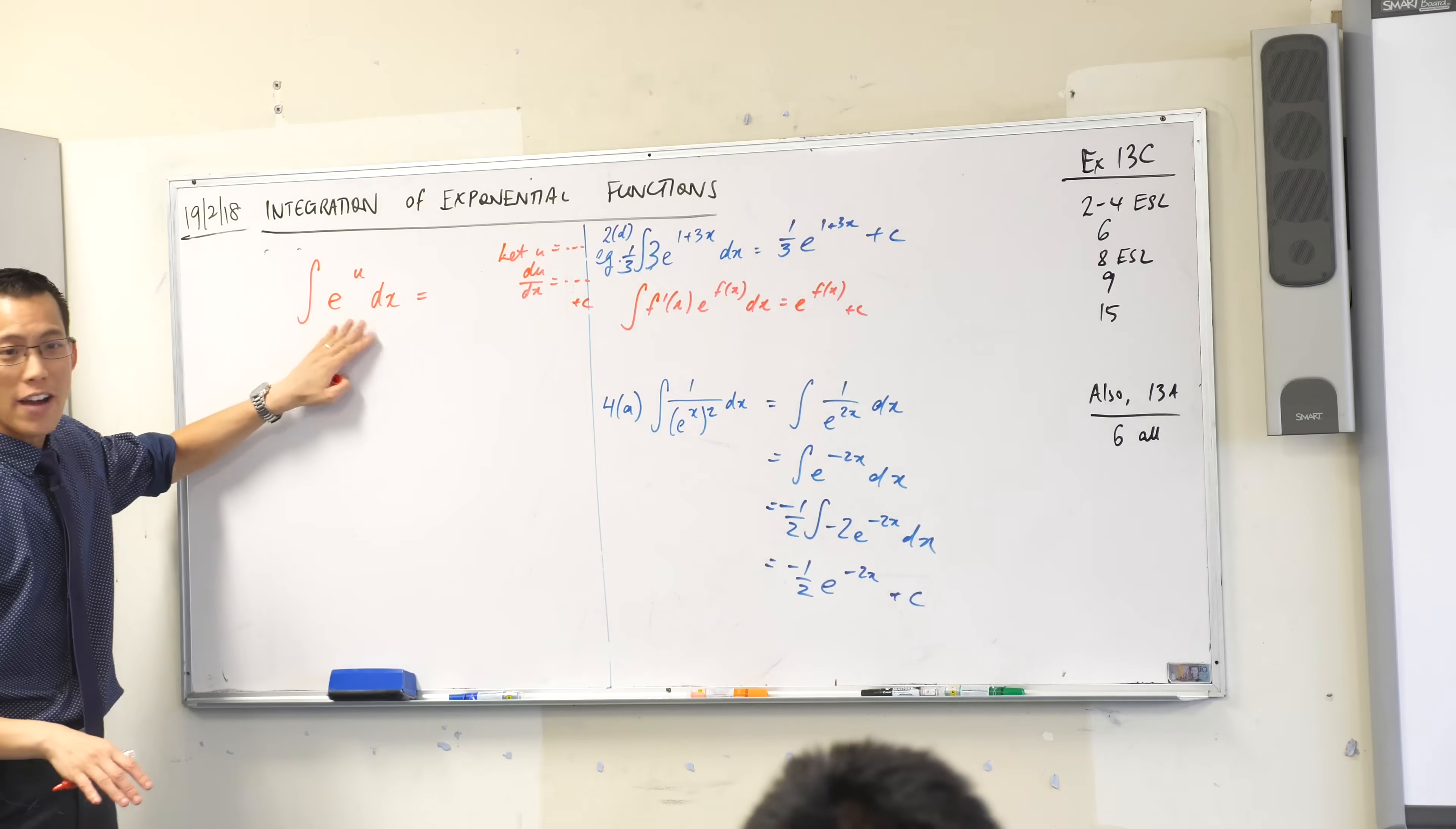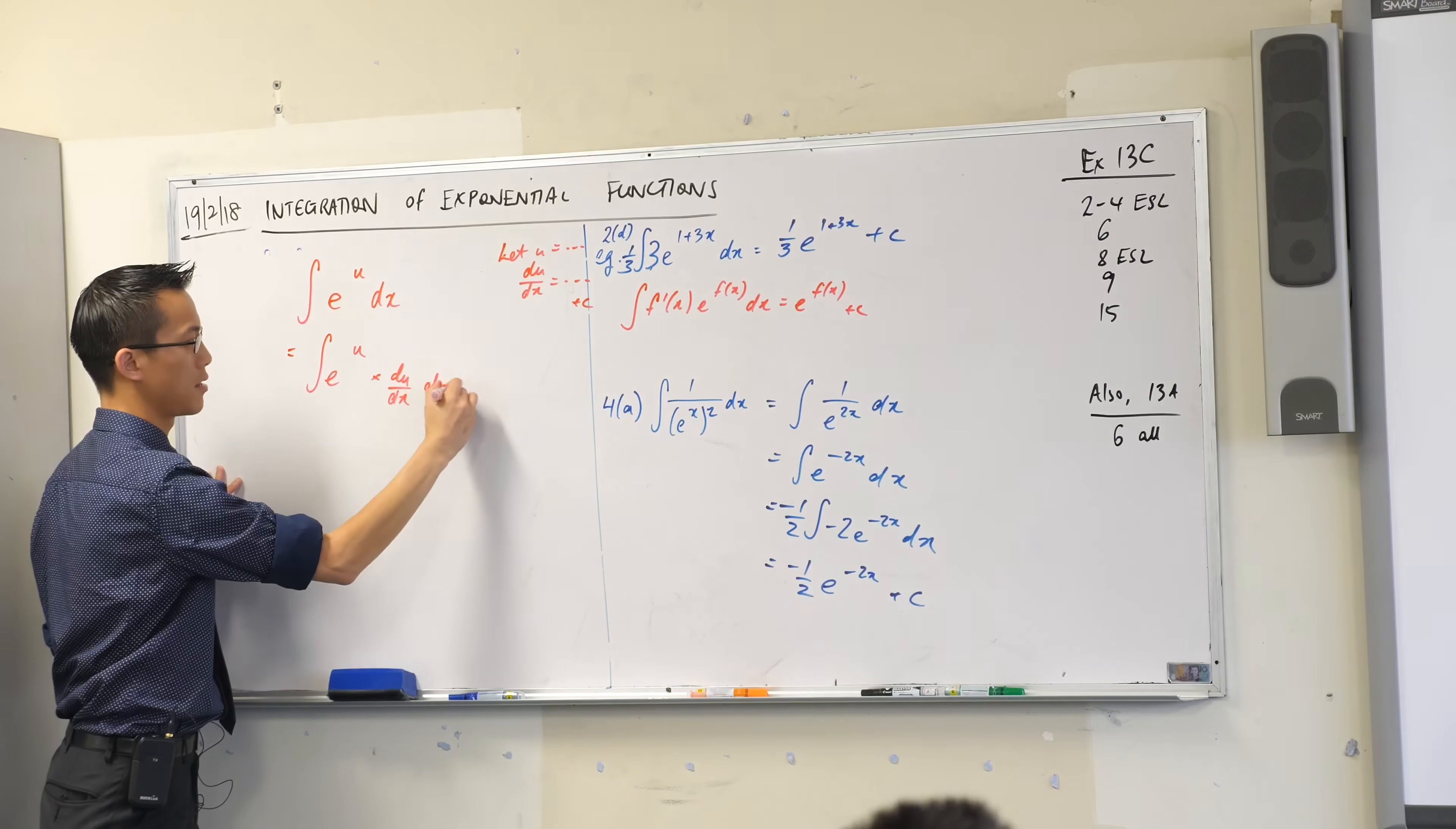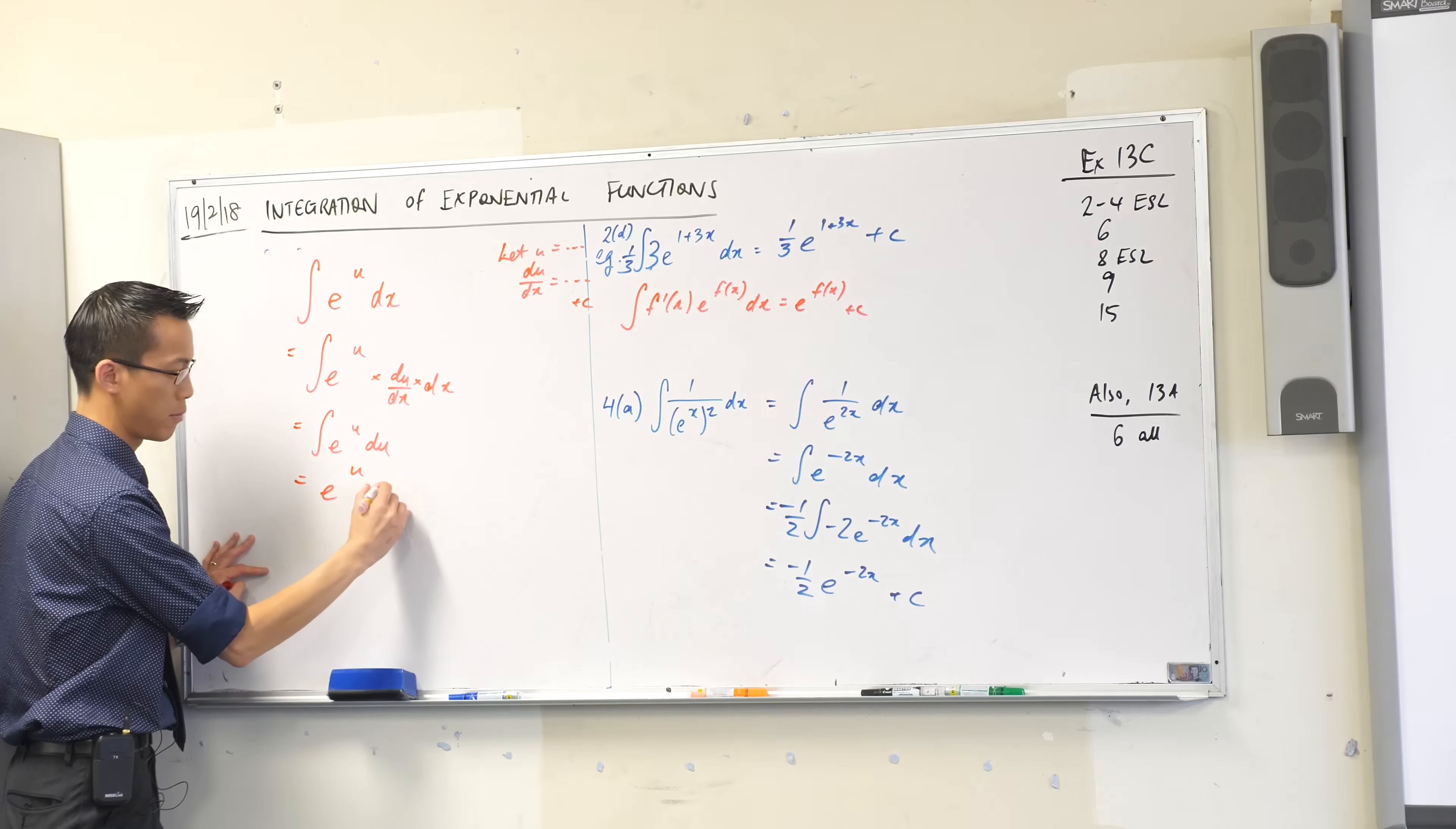Now watch this. If I insert that into here, right, if I have the derivative inside here, that du on dx, watch what happens. E to the u times du on dx, if it were there, times dx, right? What happens with the dx's? They just cancel. And this is just a regular exponential. It's just e to the u plus c.